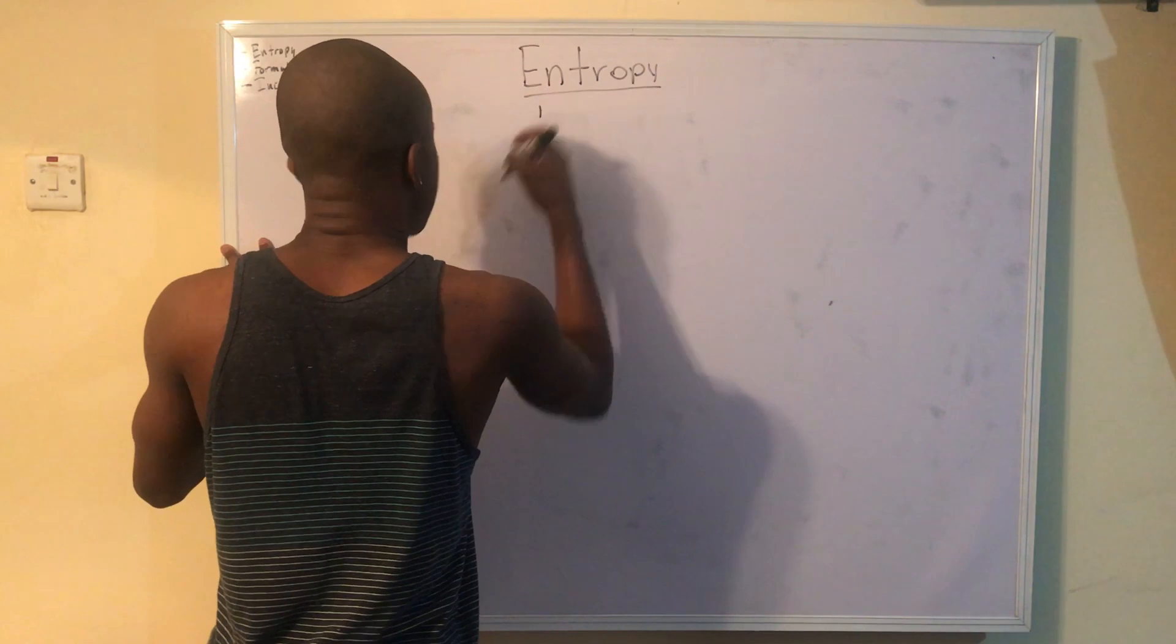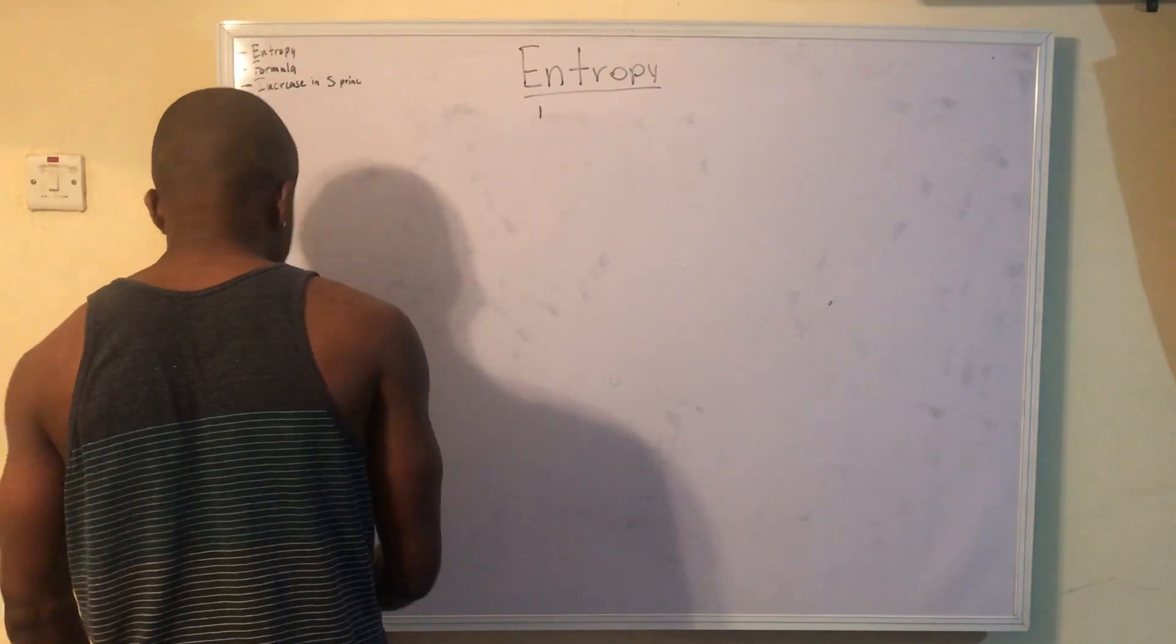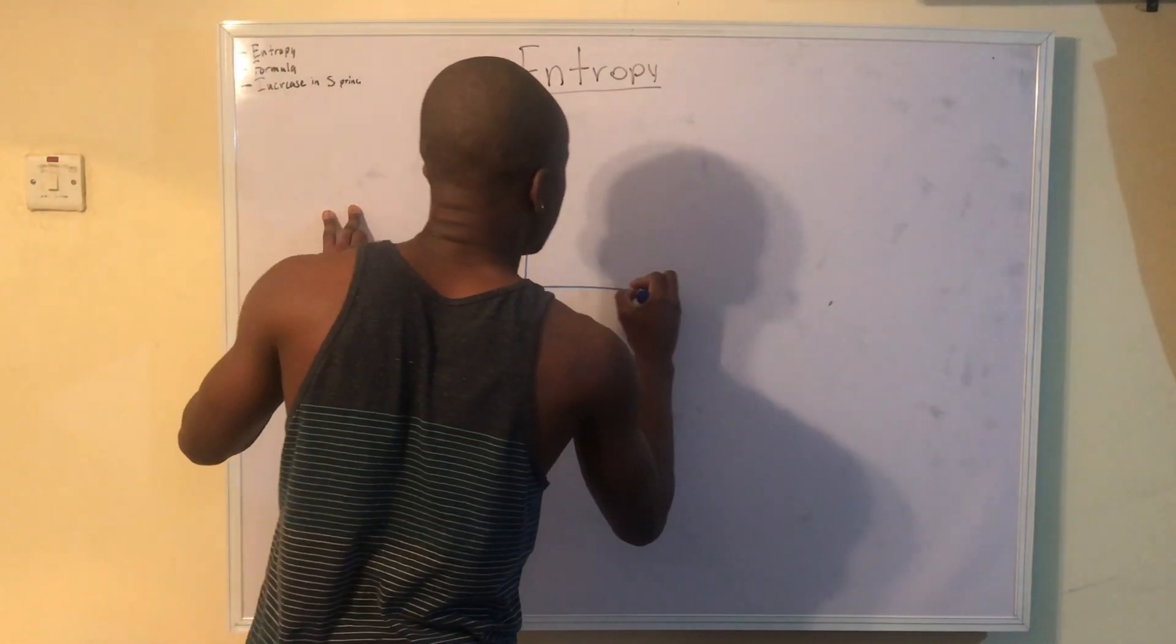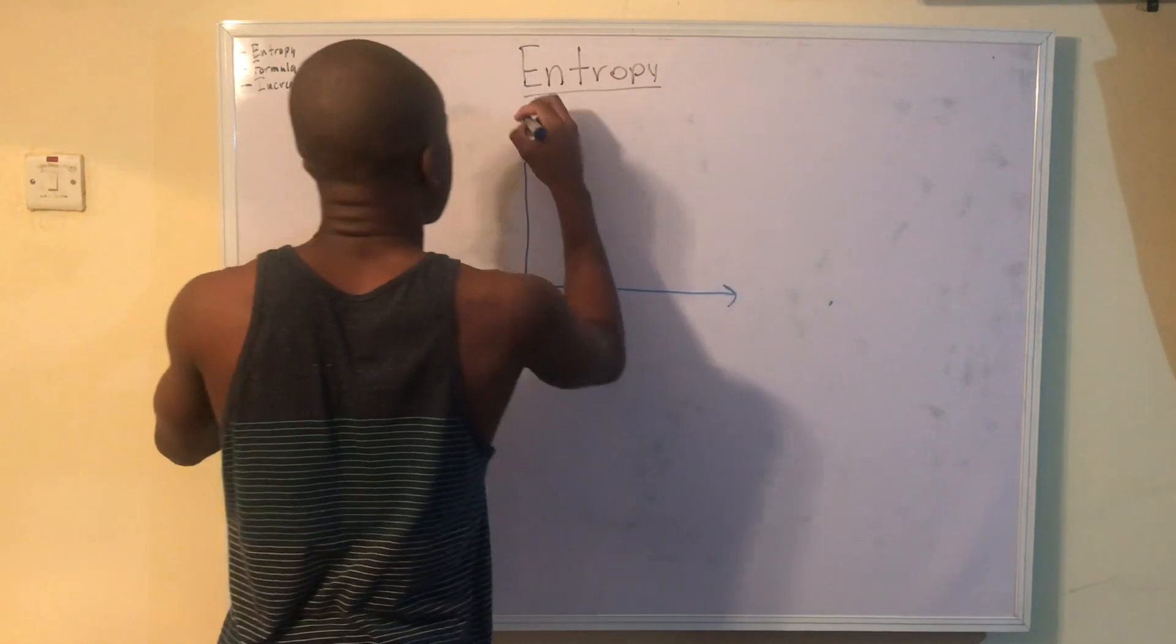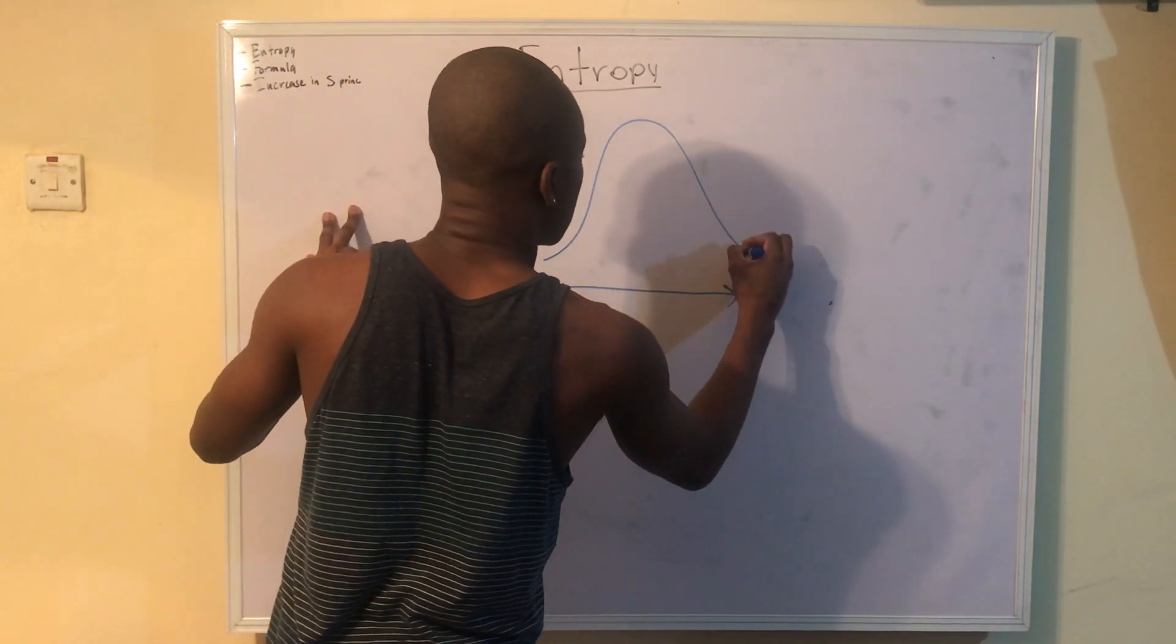So we plot TS diagrams. Let me use blue instead. We plot temperature against entropy and we sort of get the same dome that we used before. So we end up getting something like this, okay?